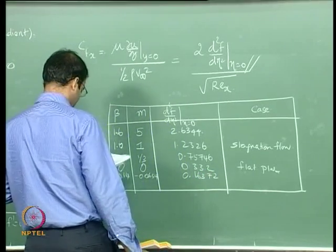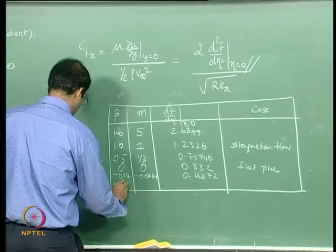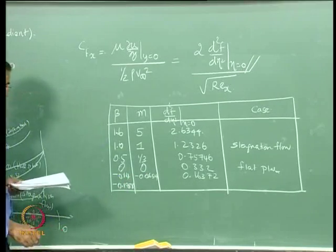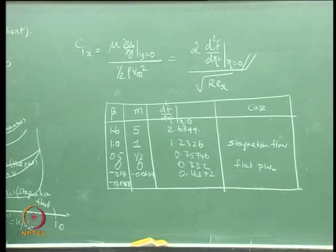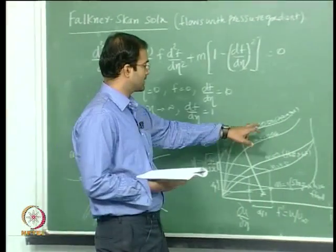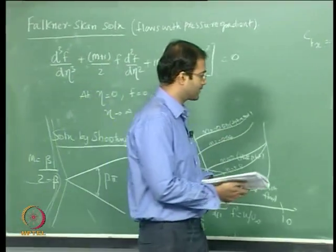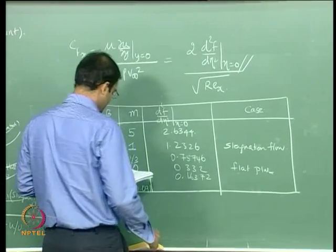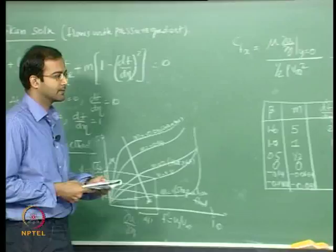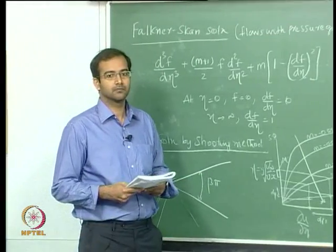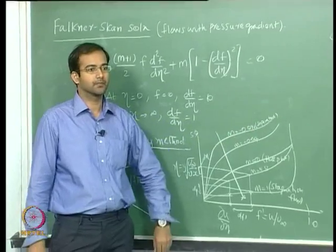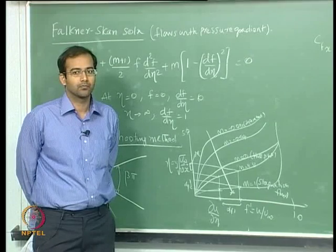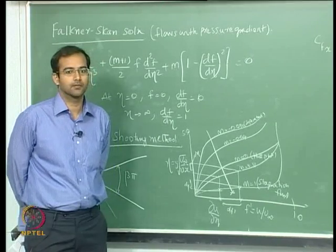Can you guess the curvature value for M = −0.091? The corresponding F″(0) value is −0.1988. What do you think the curvature will be for the separated flow case? At the point of separation, what is du/dy?